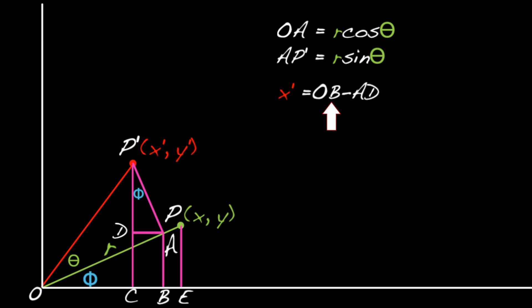But what's OB? It's adjacent to phi, so cosine phi equals OB over OA. And we know that OA equals R cosine theta. So, cosine phi equals OB over R cosine theta. And OB equals R cosine theta cosine phi. So, OB equals R cosine phi times cosine theta.